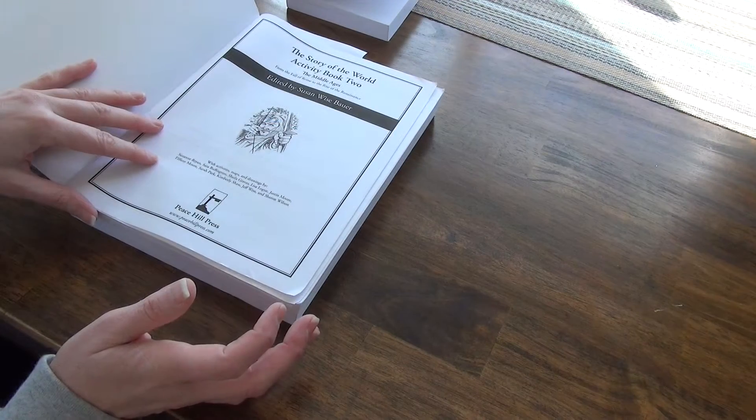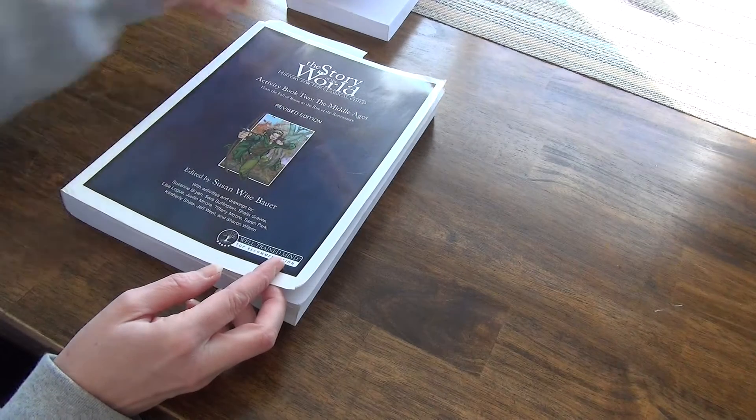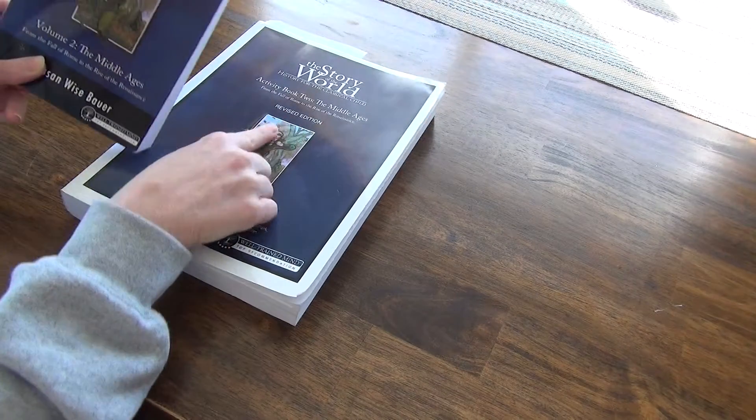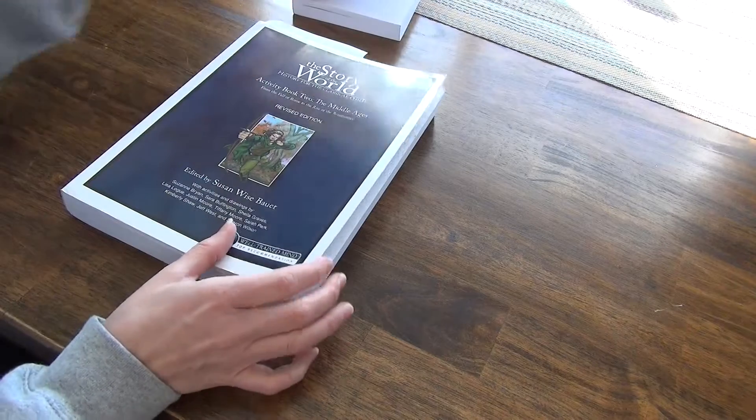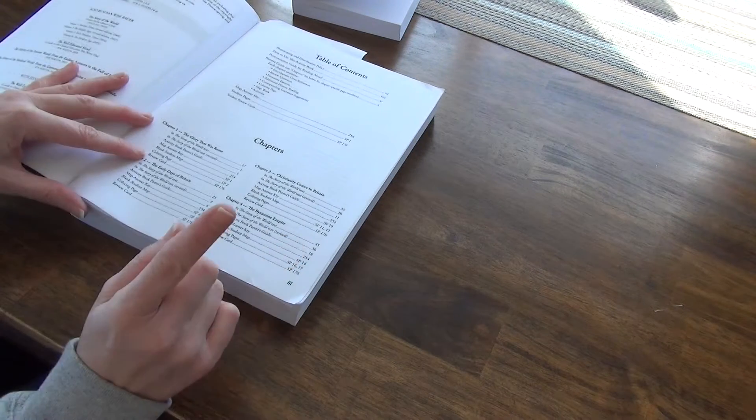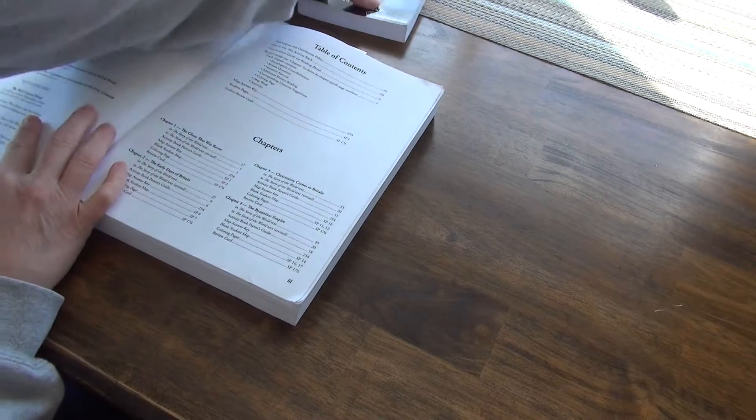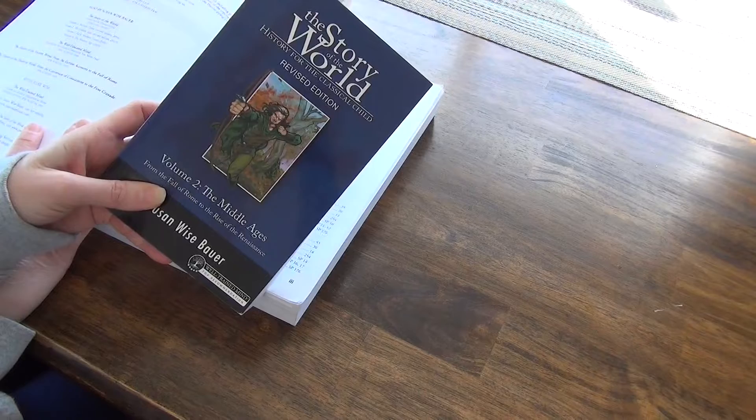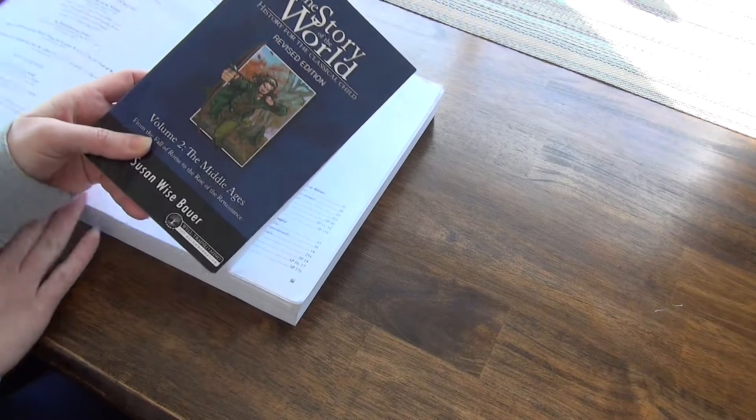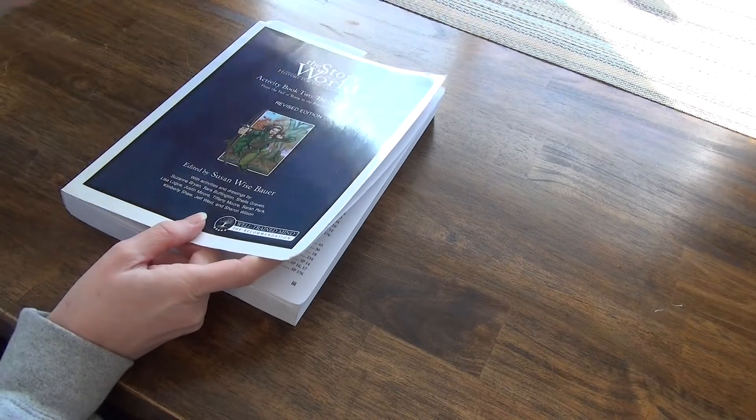Now here's Story of the World activity book two. And I think, yes, this is the edited one. They're the revised edition. But what's really neat that I noticed about this is that they also have the original text in here too. So if you were able to find volume two but it wasn't the revised edition, you can still use this, which I think is really neat.